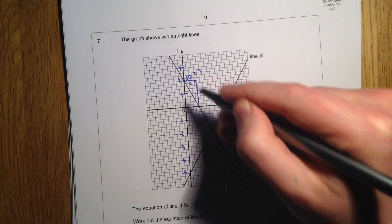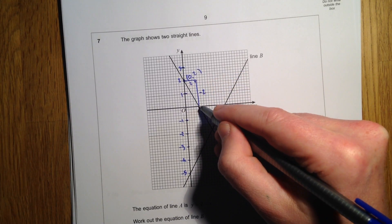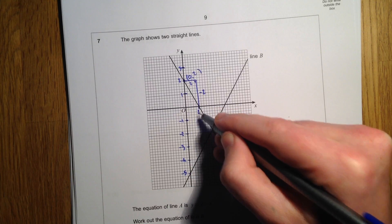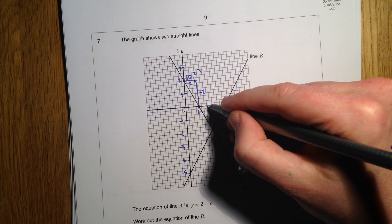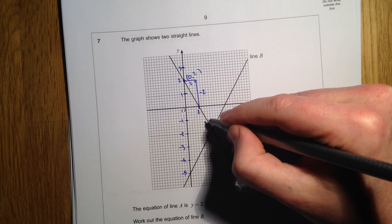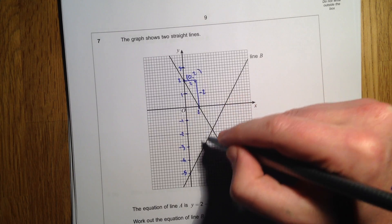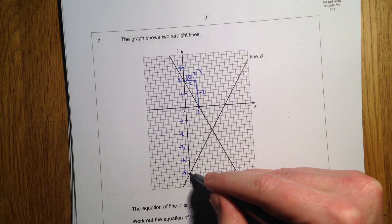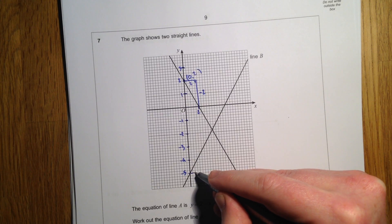So that means that it goes down 1 for every one across we go. So we've gone across 1, 2, 3, 4, 5 squares.